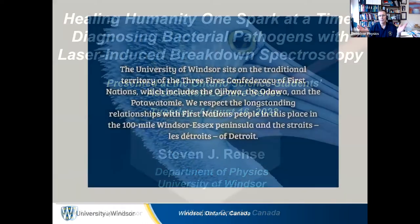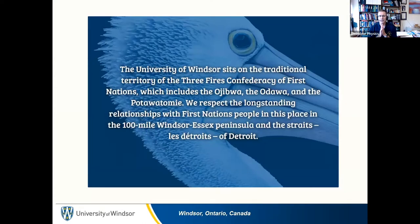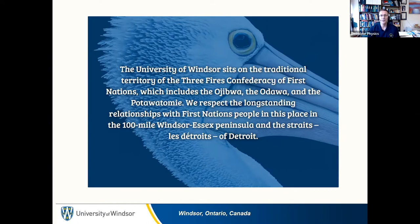We start with our land acknowledgement statement. It's very important to recognize that here at the University of Windsor, we're sitting on the traditional territory of the Three Fires Confederacy of the First Nations. That includes the Ojibwa, the Ottawa, and the Potawatomi. We respect the long-standing relationships with the First Nations people in this place and the 100-mile Windsor-Essex Peninsula and the Straits of Detroit.